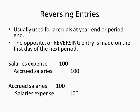So you could reverse it — there are a couple of different things you could do here. So if you have an accrued salary for $100 — that's the number I have up here, so that's the number I'll use — you make this first journal entry. You debit salaries expense for $100 and you credit accrued salaries for $100.